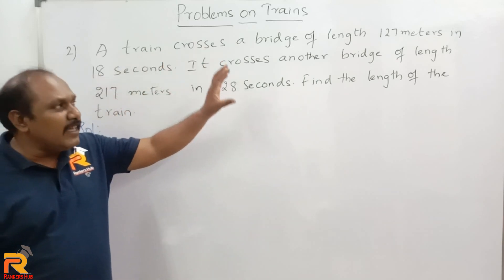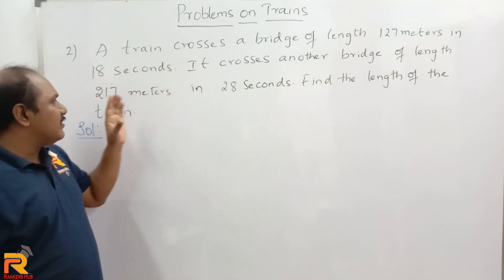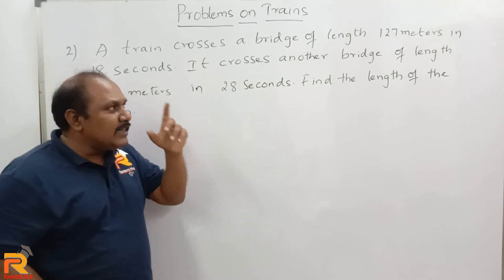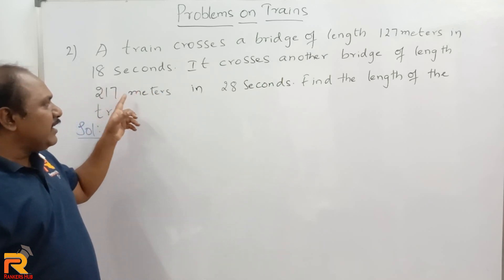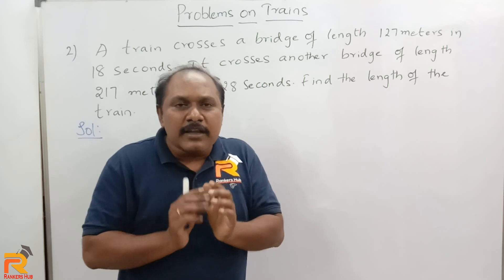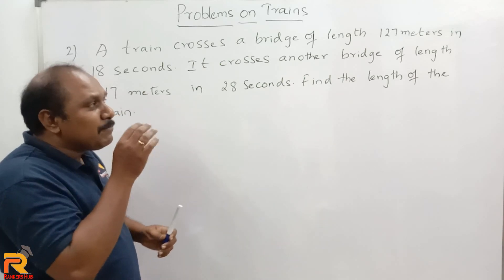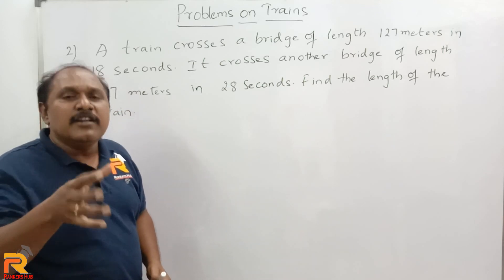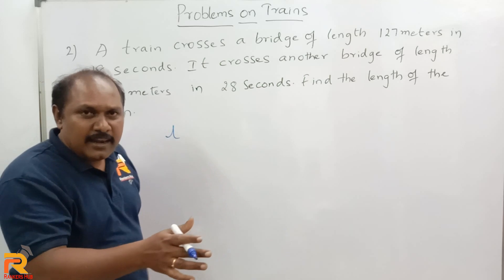A train crosses a bridge of length 127 meters in 18 seconds. It crosses another bridge of length 217 meters in 28 seconds. Find the length of the train. Coming to the basic point: to cross a bridge, the train has to travel a distance equal to the length of the train plus the length of the bridge. We do not know the length of the train, so assume the length of the train is L meters.